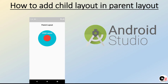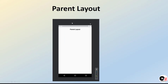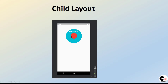The topic of today's video is how to add a child layout in a parent layout. As you can see in this slide, there is a parent layout, and inside this parent layout there is one child layout. The parent layout has nothing inside it except one text, while the child layout contains a circular card, some buttons, and some text.